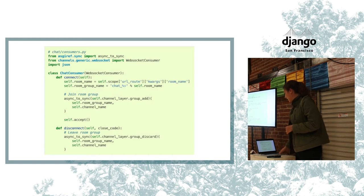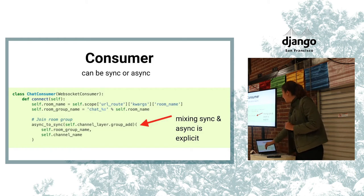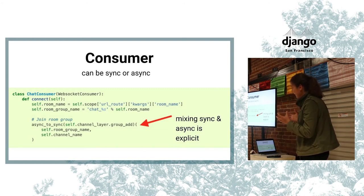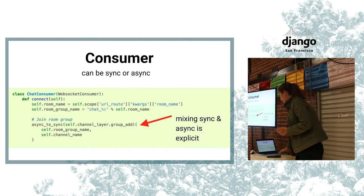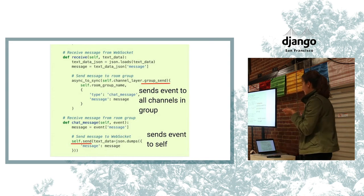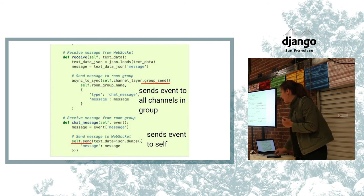Here's a slightly more advanced consumer. We have our room name and group name, and because we're adding an asynchronous layer to Django's synchronous layer, we need to be explicit when converting between the two — that's where you get the async_to_sync syntax. Unlike before when we just accepted all connections, here we're actually joining a room and joining the group. When we receive a message from a WebSocket, we send it to the group, not just to ourselves.